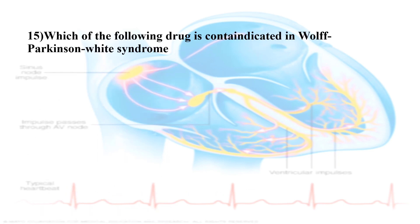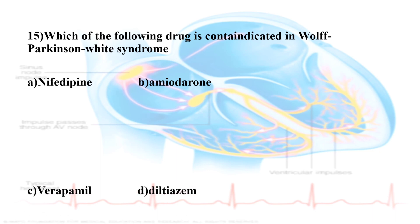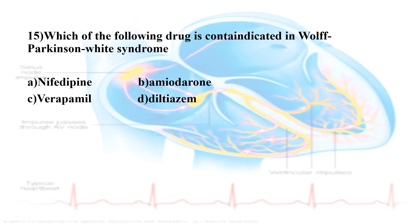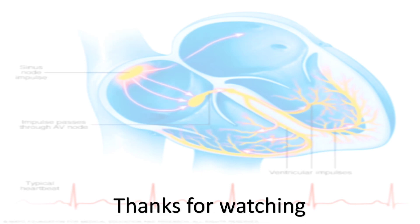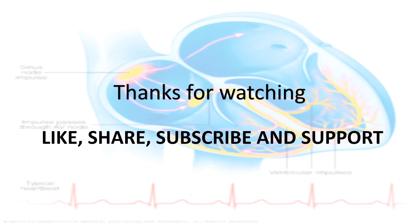Fifteenth question: Which of the following drugs is contraindicated in Wolff-Parkinson-White syndrome? The options are: Option A, Nifedipine; Option B, Amiodarone; Option C, Verapamil; Option D, Diltiazem. Wolff-Parkinson-White syndrome is a re-entry type arrhythmia. Verapamil is contraindicated in this syndrome. That is the correct answer. We will meet in our next question session — subscribe and support our channel. Thank you.